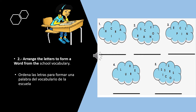Number 2: Arrange the letters to form a word from the school vocabulary. Ordena las letras para formar una palabra del vocabulario de la escuela. El vocabulario de la diapositiva anterior. Yo tomé una palabra y la desordené. Ahora te corresponde a ti ordenarla. Te voy a dar un ejemplo. Number 1: H-I-C-R-A. ¿Qué palabra puedo formar? La palabra es chair. ¡Sigan solitos!